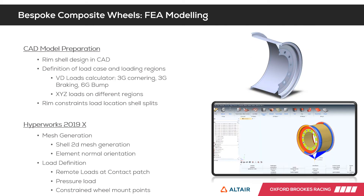To ensure the structural integrity and failure mitigation of the wheel, we needed to run this design through an FEA using a trusted and accurate platform. This is where Altair HyperWorks 2019x has benefited our design process, with its extensive composites analysis toolbox in OptiStruct, allowing us to analyze our design confidently. To begin the analysis, we prepared the shell in our CAD software as a shell model representing the outer surface of the wheel, also split up into various sections. We used the same load links calculator that Raquel illustrated earlier to derive the X, Y, Z forces at the contact patch resulting from vehicle accelerations.